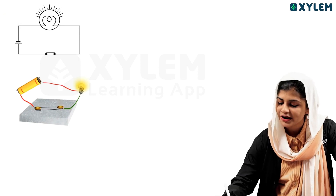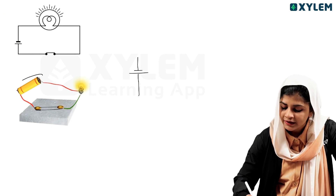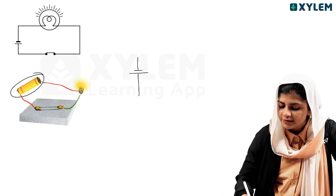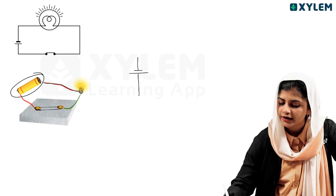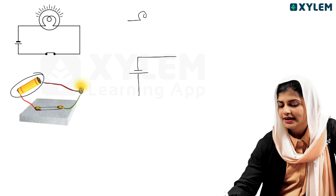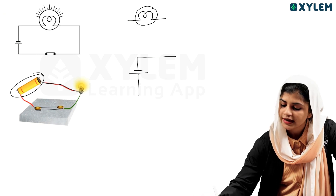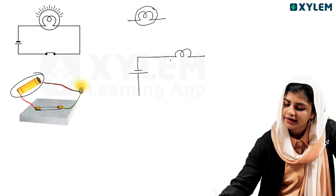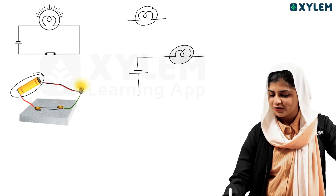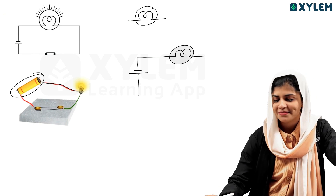Next, we have the bulb. The bulb is represented as a rounded symbol in its symbolic representation.